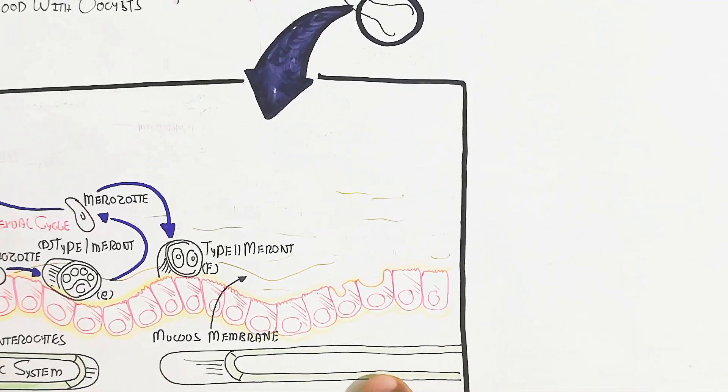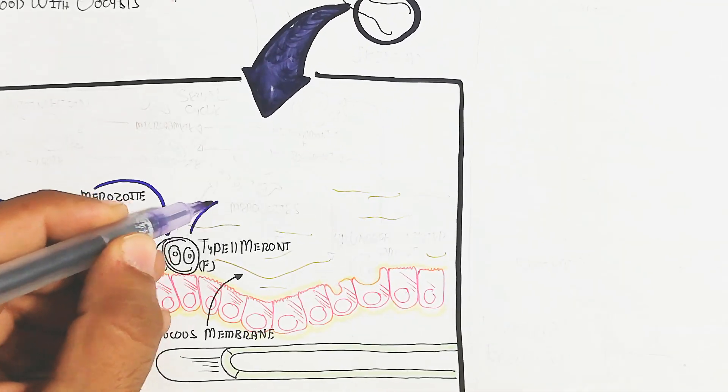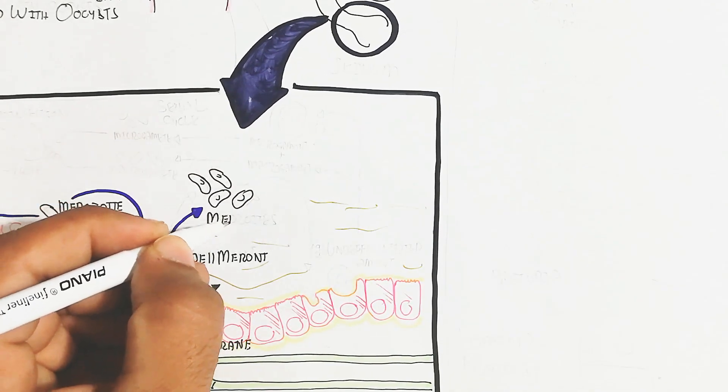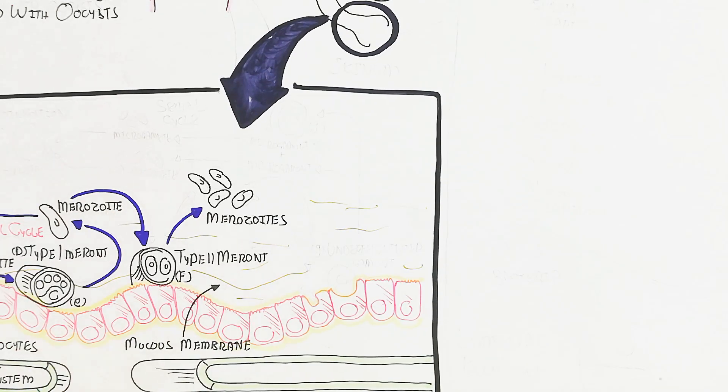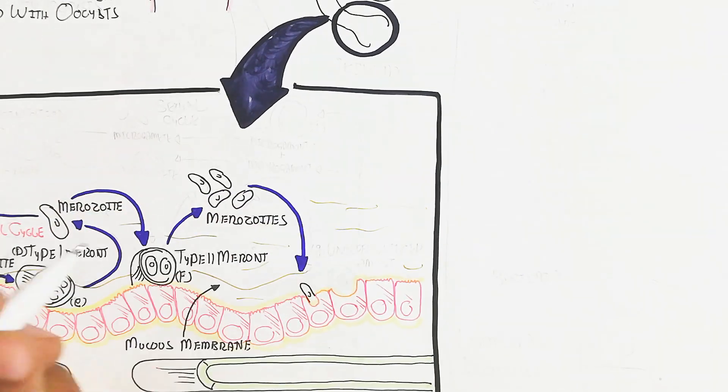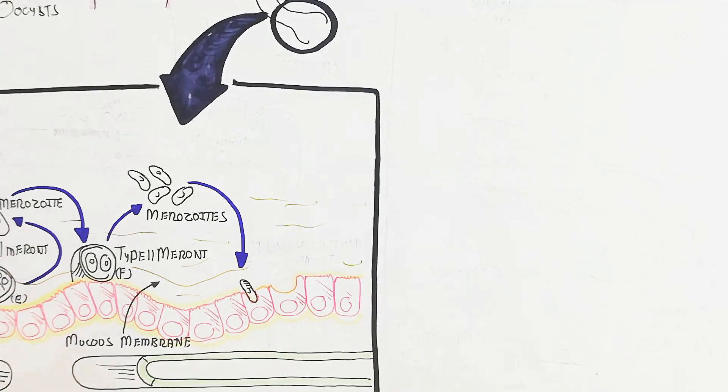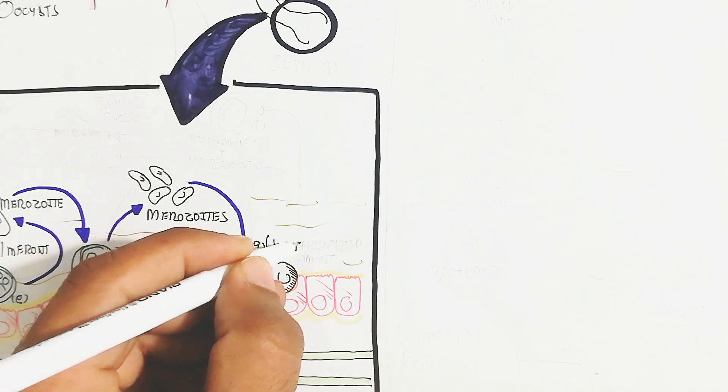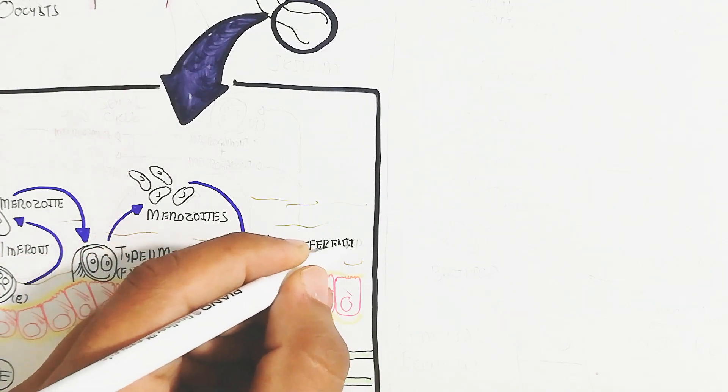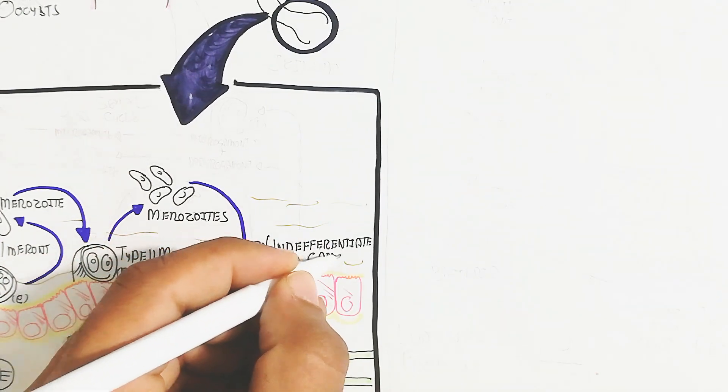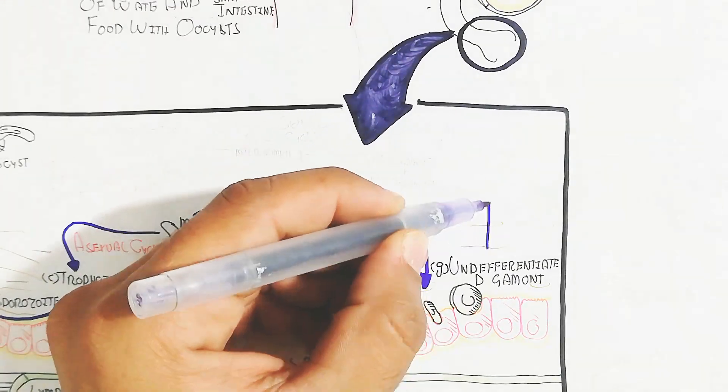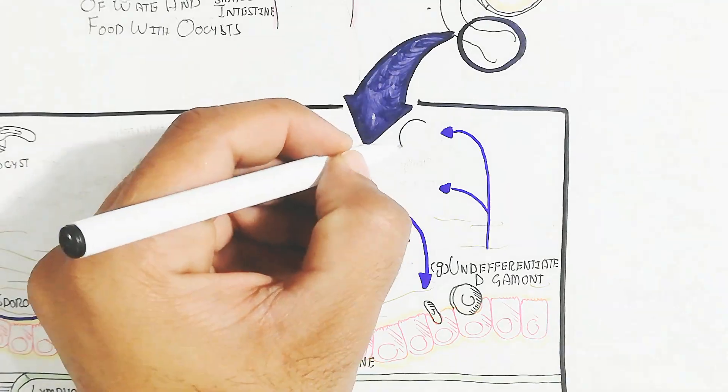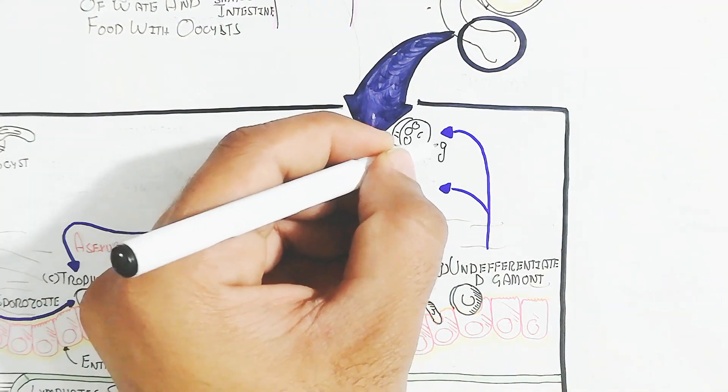On the other hand, the merozoite can also convert into type 2 meront. This type 2 meront contains merozoite production, but this merozoite is different. This merozoite will produce microgamete and macrogamete. This is the undifferentiated gamete, which converts into micro and macro gametes. The micro and macro gametes, after rupturing, begin the sexual cycle.